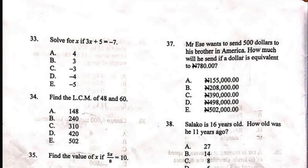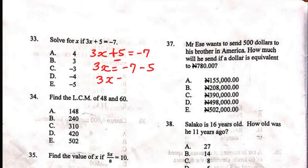Question 33: solve for x. 3x plus 5 equals minus 7. Collect like terms — move plus 5 to the right-hand side; as it crosses the equals sign, it becomes minus 5. So 3x equals minus 7 minus 5. Since the signs are the same, do addition and keep the sign: 3x equals minus 12. Divide both sides by 3; 3 cancels 3, giving x equals minus 4, which is D.